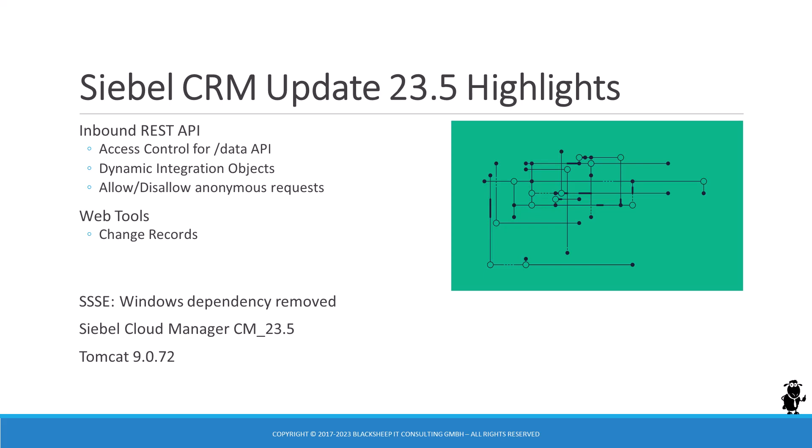In the Siebel CRM 23.5 update, Oracle is focused on two main areas: the Inbound REST API for Business Objects, or Data API for short, and Siebel Web Tools. The enhancements for the Data API include Administrative Access Control, Dynamic Integration Objects, and the ability to allow or disallow anonymous requests. Siebel Web Tools 23.5 and higher supports change records. Other areas of improvement include the SSSE Siebel Server Sync for Exchange integration, which is no longer dependent on Microsoft Windows, and Siebel Cloud Manager. The 23.5 installer also lays down a more recent version of Apache Tomcat 9.0.72.